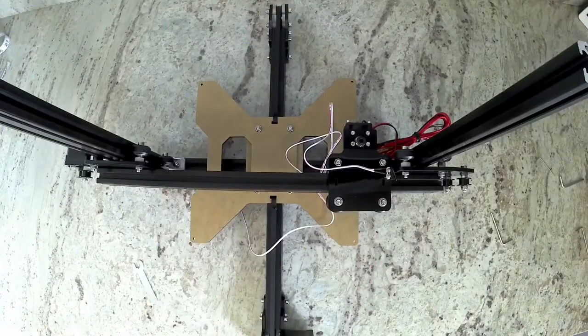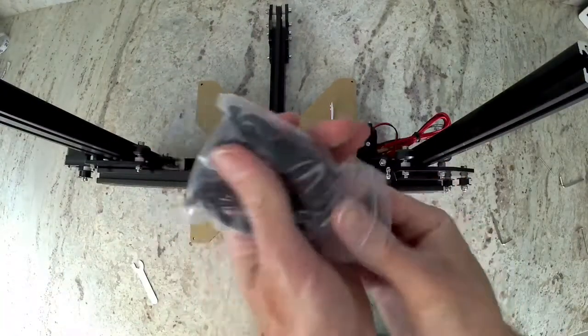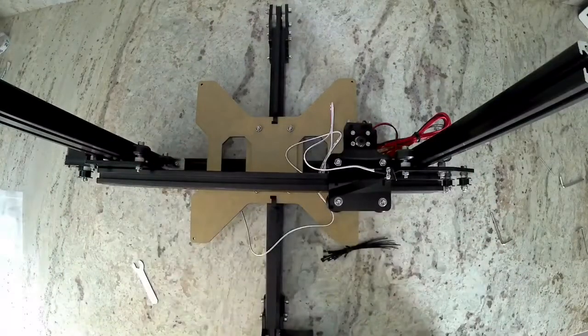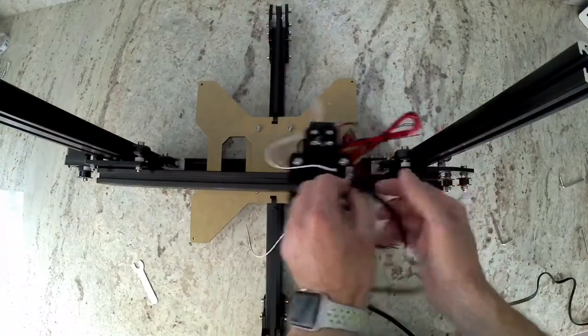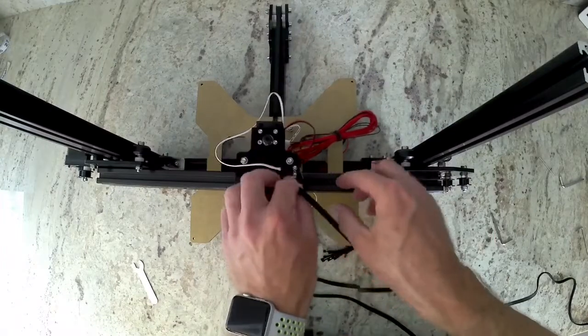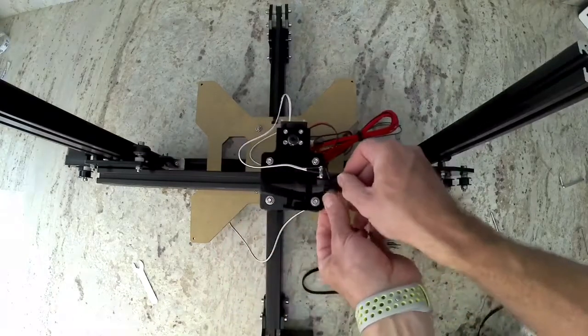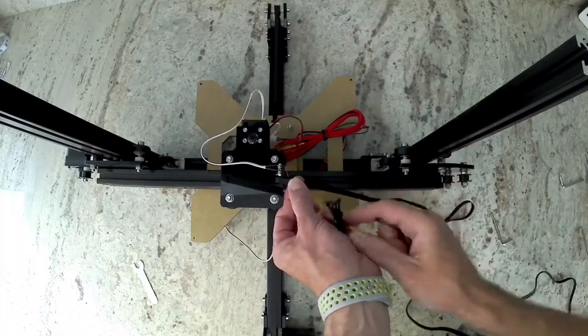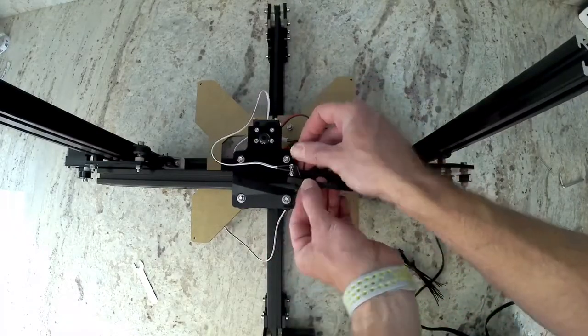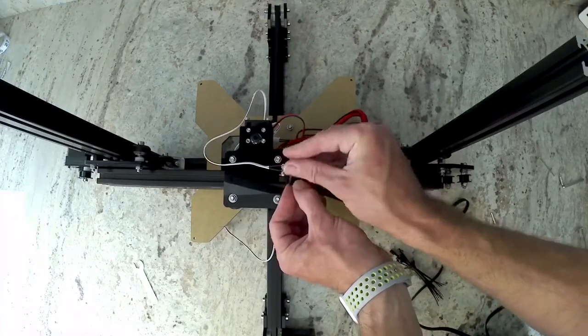Now we're going to hook up the x-belt. So go ahead and get the bag with the remaining belt and zip ties. Just as we did the y-belt, for this one we're going to use these holes on the x-carriage. The teeth on the belt are going to be facing down, and then we're going to zip tie them together.